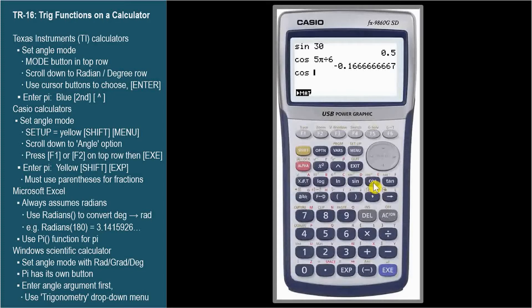We need to use parenthesis so it recognizes 5 pi over 6 as the argument for the cosine function. Cosine, open paren, 5, pi, division, 6, close paren, execute. Much better.